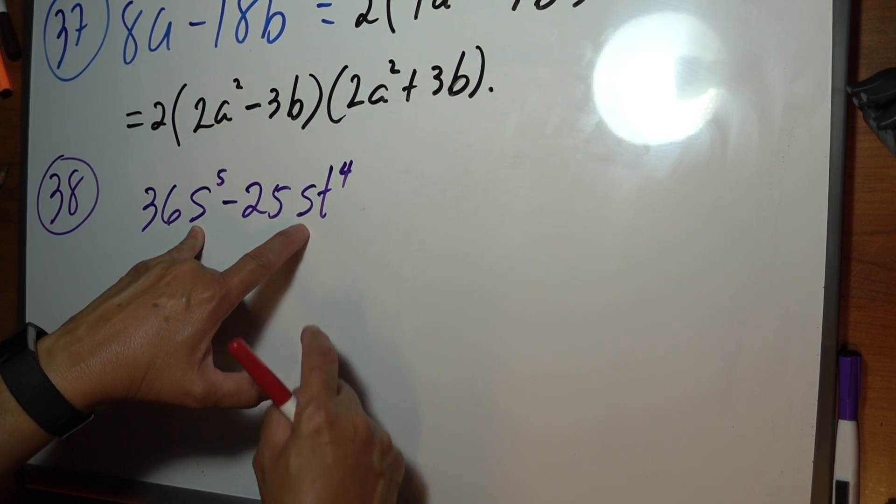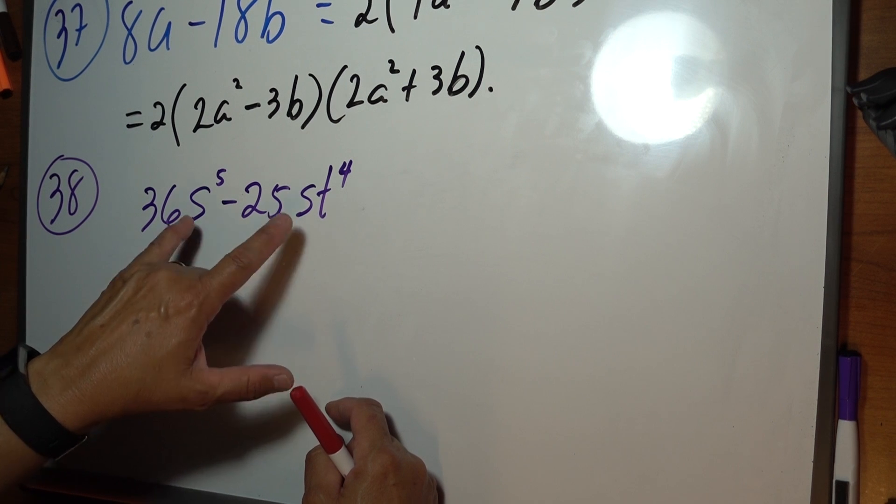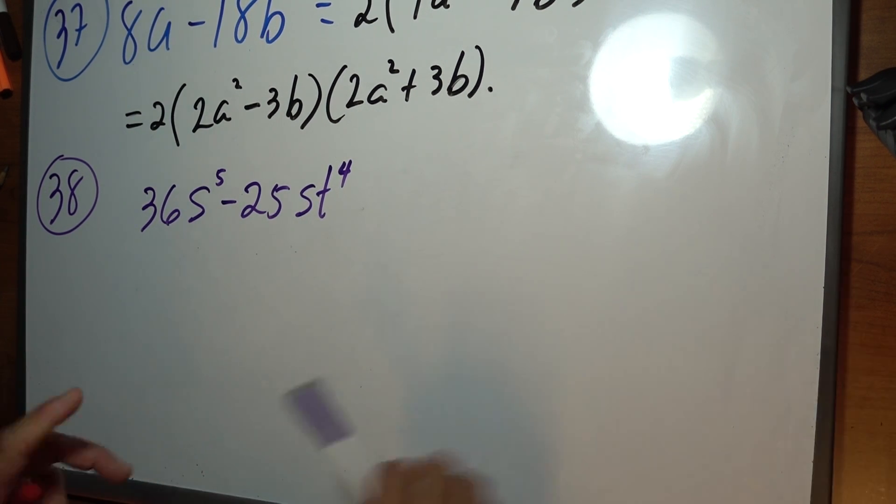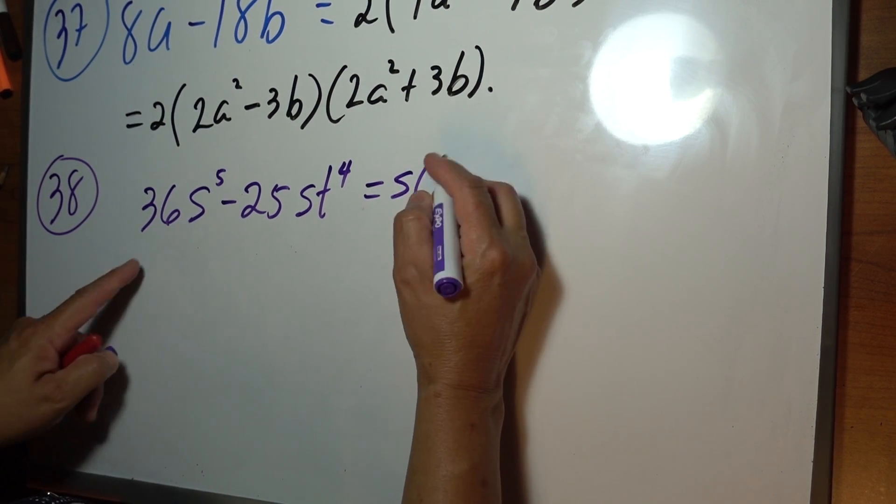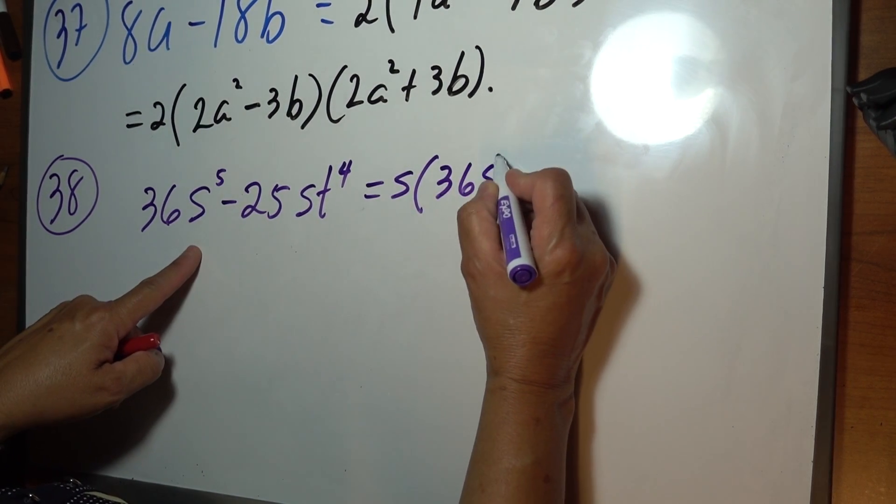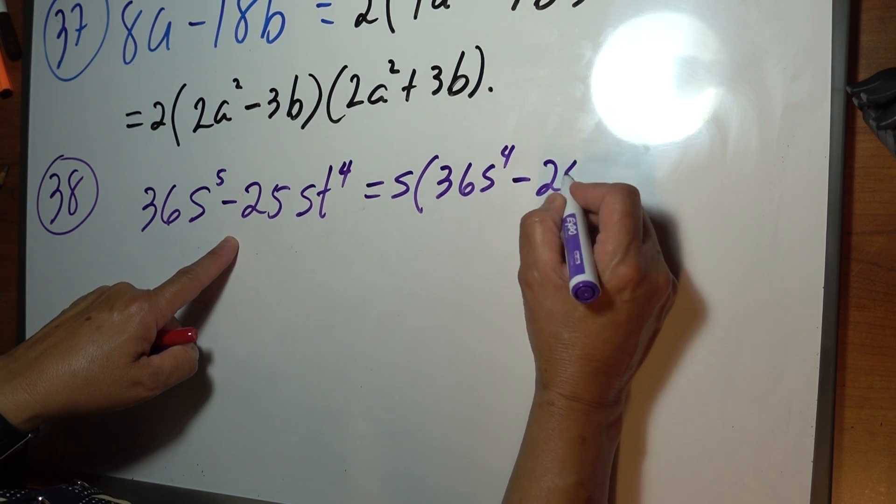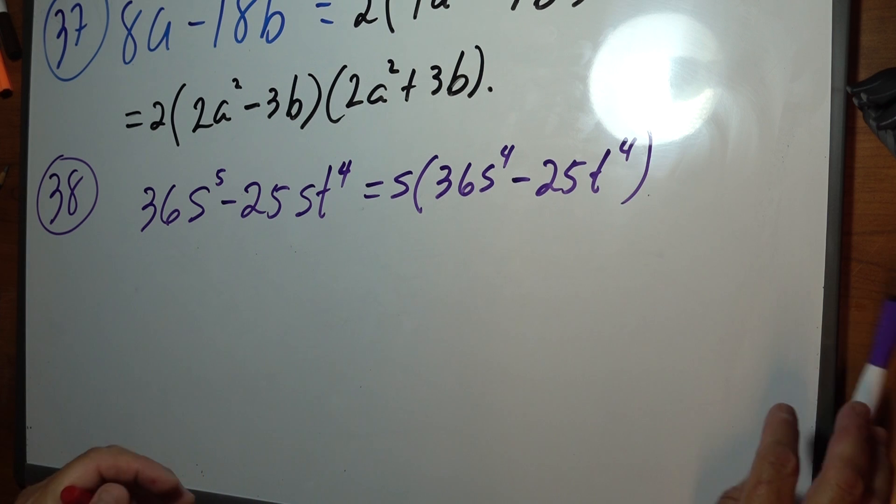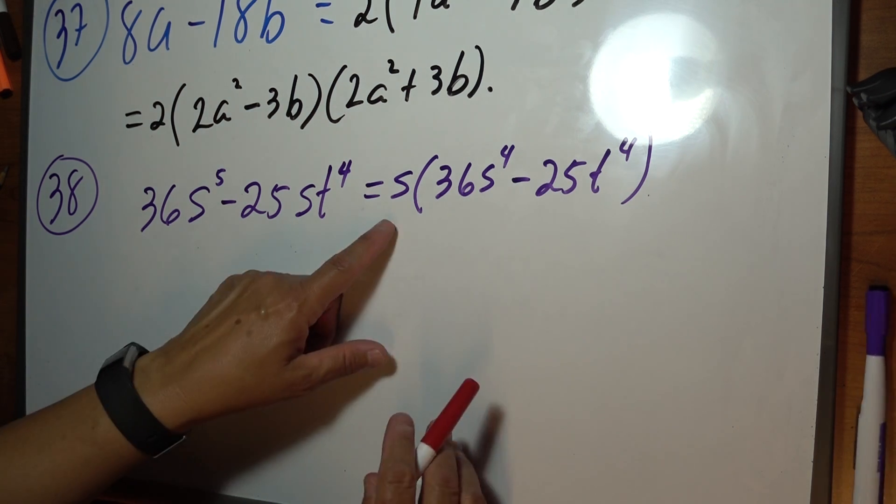So, like I said, always check if you have greatest common factor, which in this case is S. So, we're going to pull out the S. 36s to the 4th minus 25t to the 4th. Now that we pulled out the S, we'll see this is a perfect difference of 2 squares.